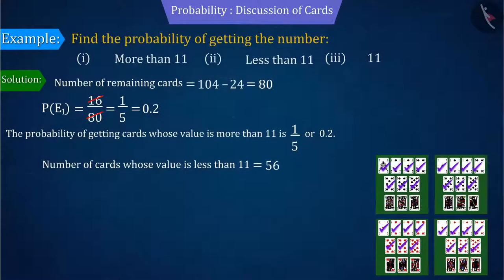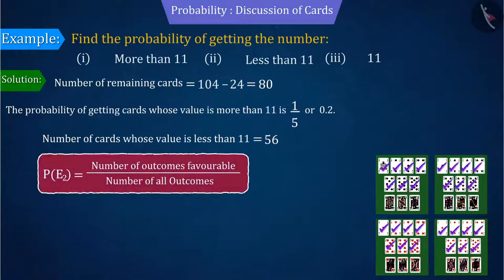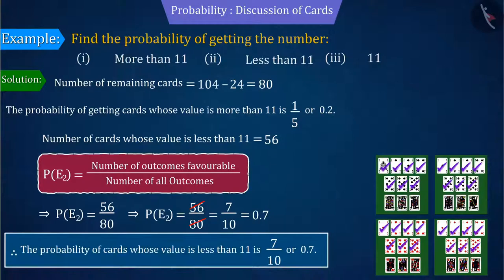Therefore, we can tell from the probability formula that the probability of getting cards whose value is less than 11 is 0.7.